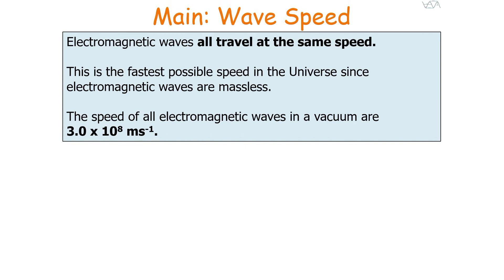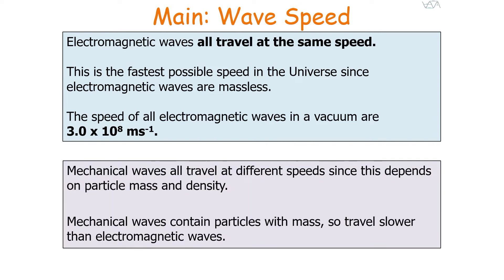So what do we know so far? Electromagnetic waves all travel at the same speed — the fastest possible speed in the universe — since electromagnetic waves are massless. The speed of all electromagnetic waves in a vacuum is 3 times 10 to the 8 meters per second. Mechanical waves all travel at different speeds since this depends on particle mass and density, and as they contain particles with mass, they travel slower than electromagnetic waves.